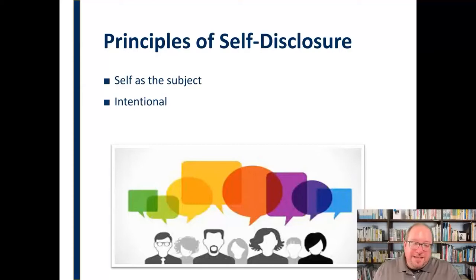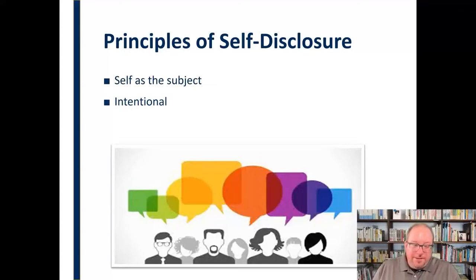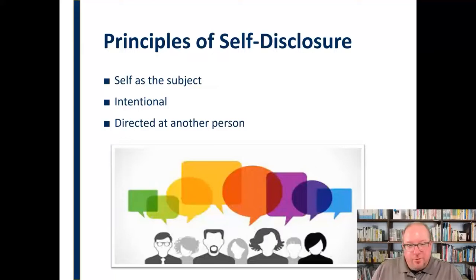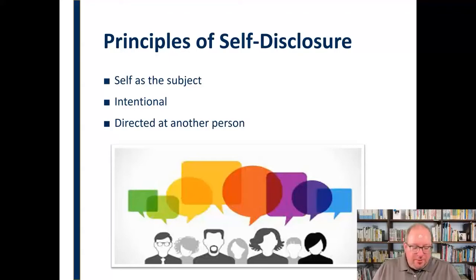Self-disclosure has to be intentional for it to be classified as self-disclosure. It can't be accidental — someone overhearing you, finding something out about you accidentally without your knowledge, or you letting it slip. That's not self-disclosure by definition. They still have that information, but self-disclosure is intentional — you mean to share that information. Self-disclosure is also directed at another person. It's not just shouted into the ether or written in your journal with the expectation that nobody will read it.